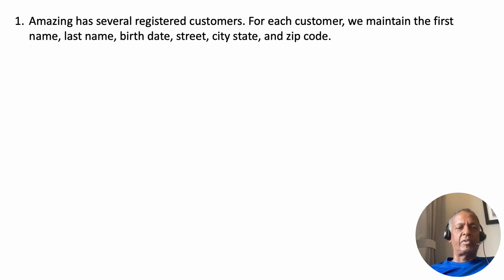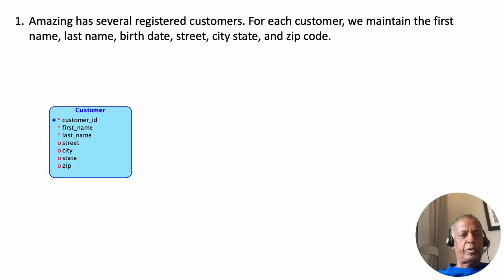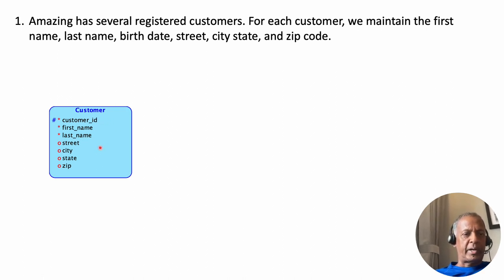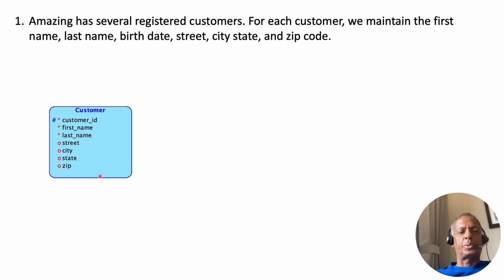First, it says Amazing has several registered customers, and for each customer we maintain the first name, last name, birth date, etc. So that will turn out to be an entity type called customer. For this customer entity type we have a primary key called customer ID, and then we keep the customer's first name, last name, street, city, state, and zip code. I have chosen to make first name and last name as required attributes, and street, city, state, and zip as optional attributes.